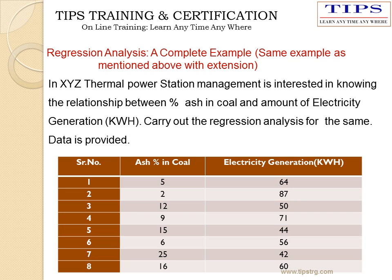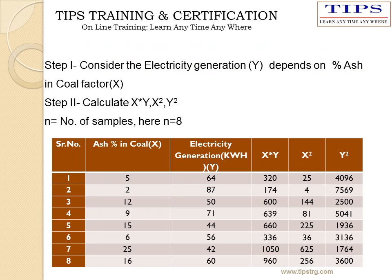The regression analysis example uses the same data discussed in the correlation equation. Step 1, consider the data for electricity generation and percentage ash content in coal. Step 2, calculate the values of x times y, x squared, and y squared in the table.